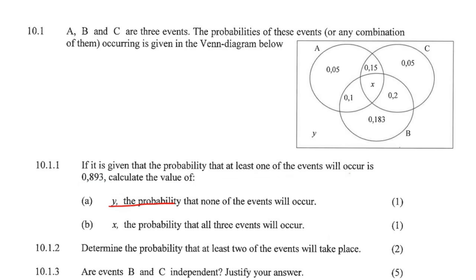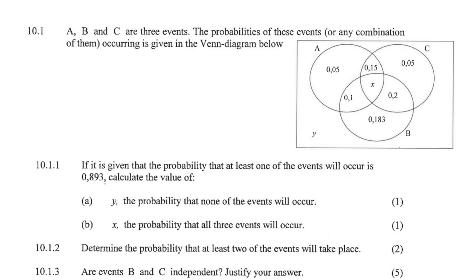The probability that none of the events will occur. So if it is given that the probability that at least one of the events would occur, then what is the probability that none of the events would occur? Well, you could just say 1 minus 0.893, and that'll give us 0.107.